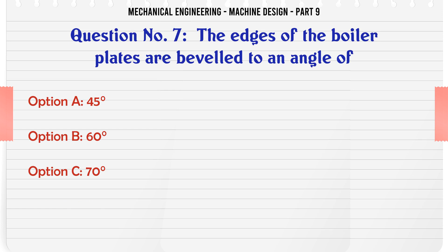The edges of the boiler plates are beveled to an angle of: A. 45°, B. 60°, C. 70°, D. 80°. The correct answer is 80°.